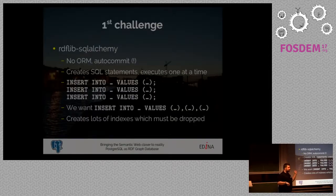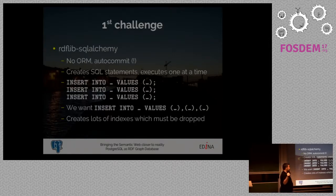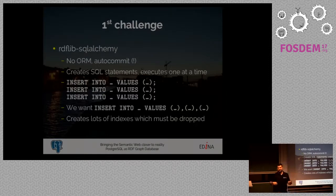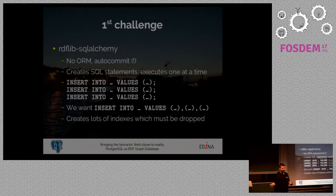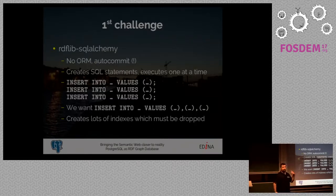RDFLib SQLAlchemy also creates lots of indexes, and those should be dropped if you want your inserts to be optimal. The DOIs we're talking about are all the DOIs that have ever been issued — we're talking about 100 million DOIs and the metadata that comes with each DOI. The final database size was around 3.5 billion triples. Those indexes must be dropped if you want to insert efficiently.